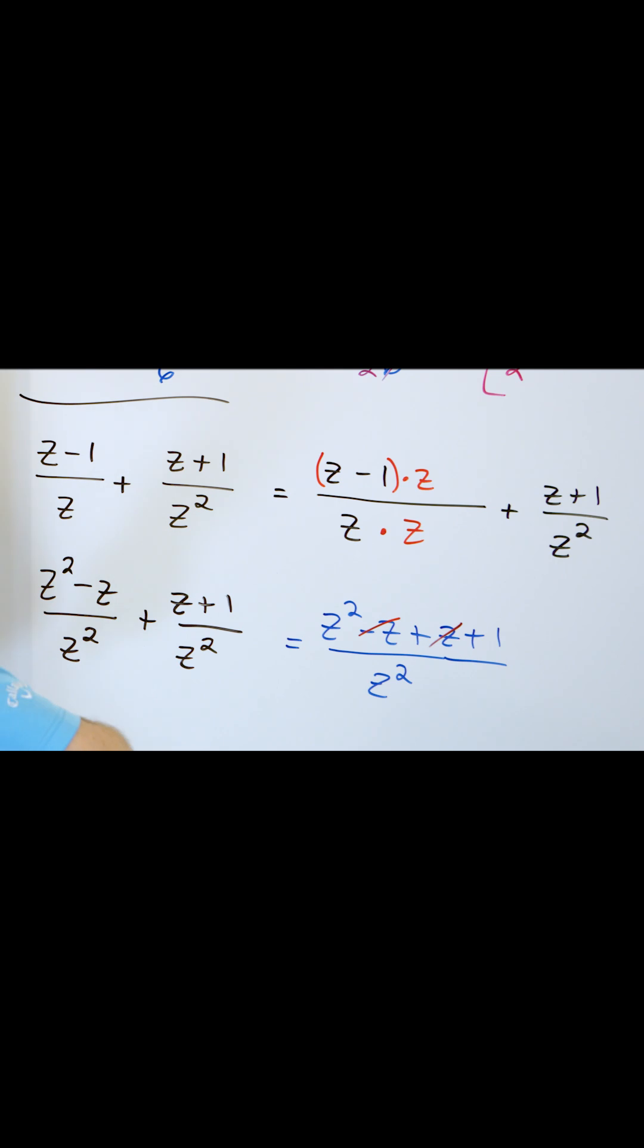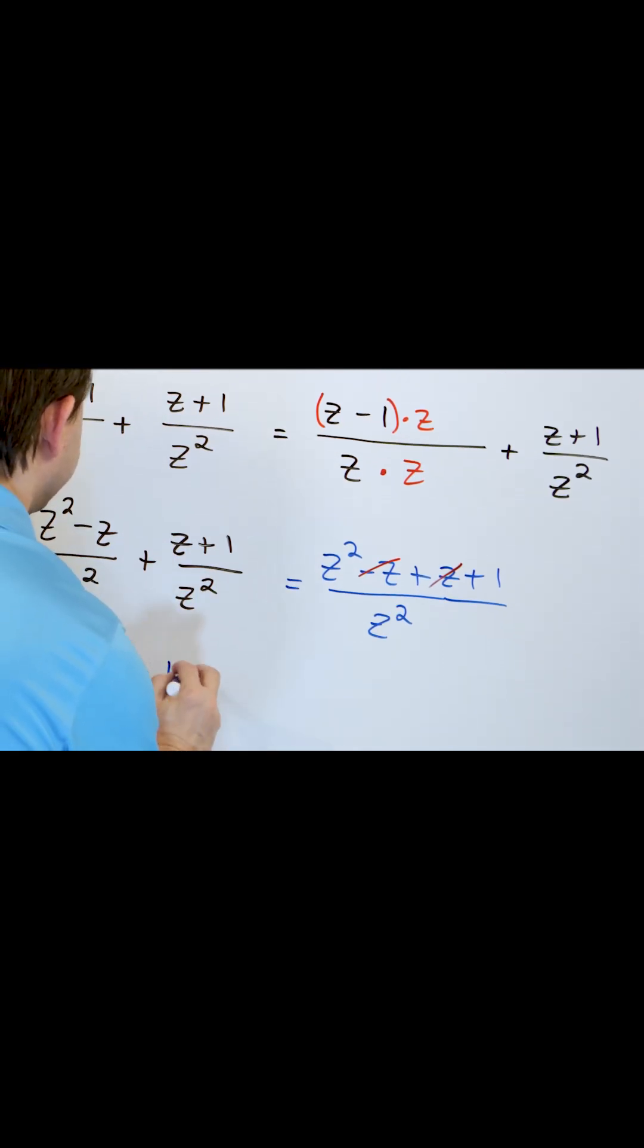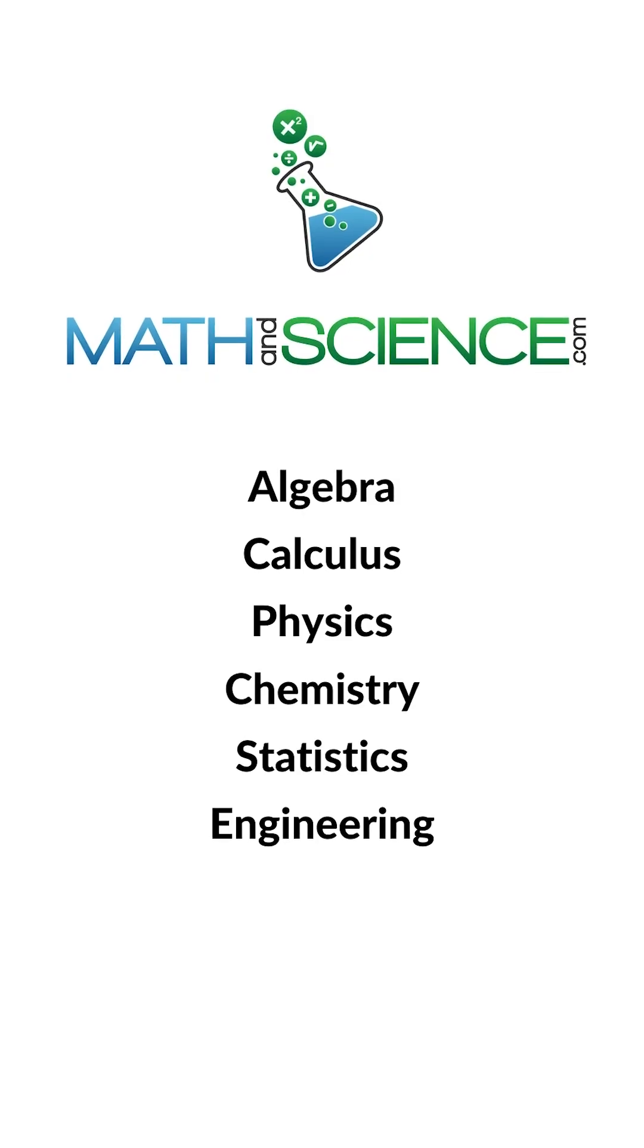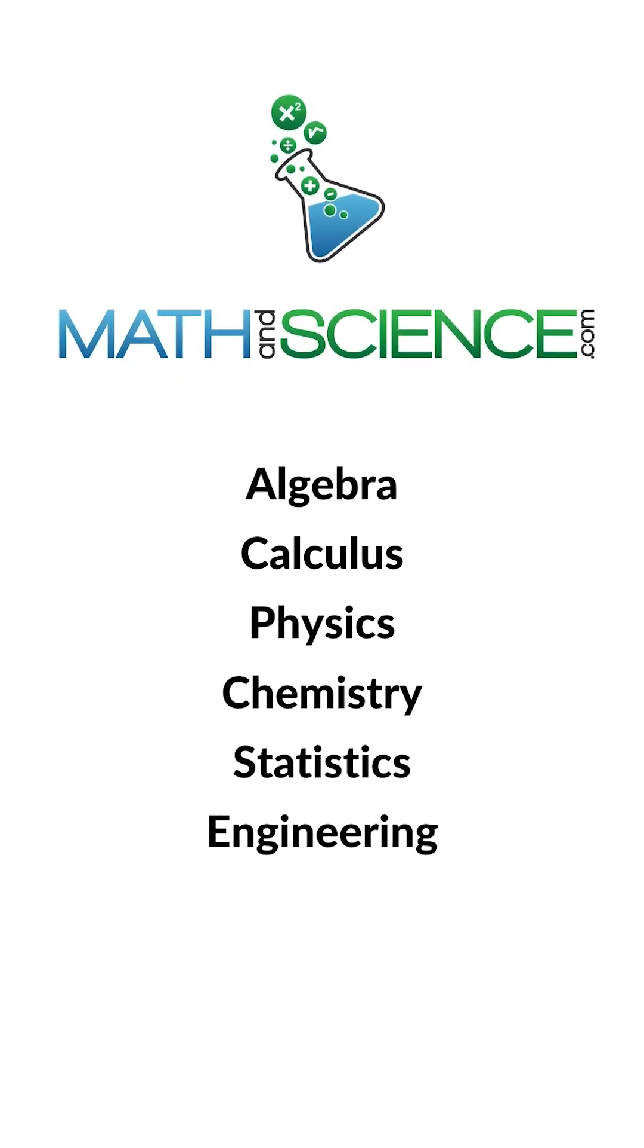So what I'm going to get in my final answer is z squared plus the one from the end, over z squared. That's it. Learn anything at mathandscience.com.